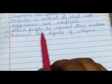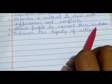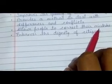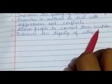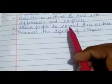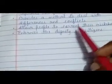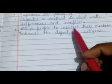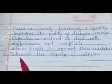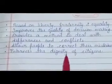Next, it allows people to correct their mistakes. In a democracy, elections are held every five years, so if we have chosen the wrong person, we can eliminate them in the next election and correct our mistake. And lastly, it enhances the dignity of citizens. When the citizen is the center point of the democratic system, the government has to work for their welfare.